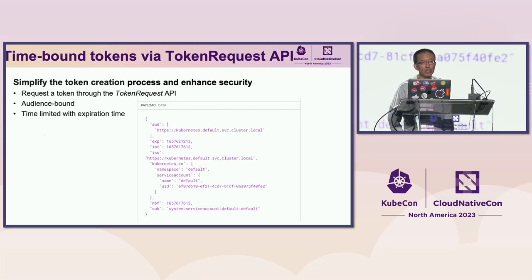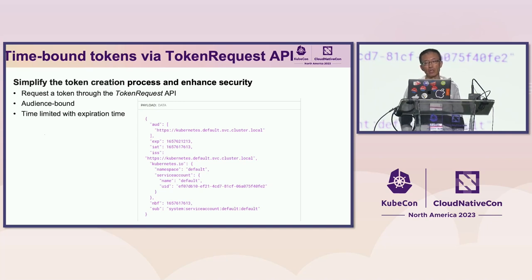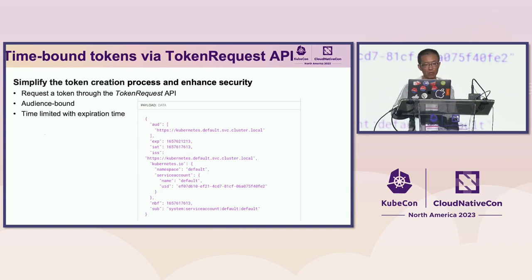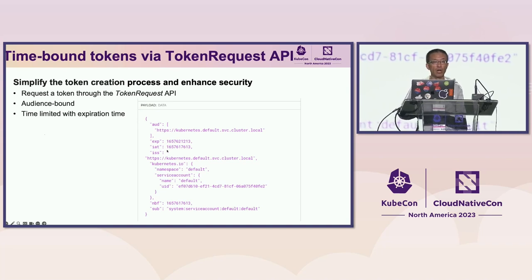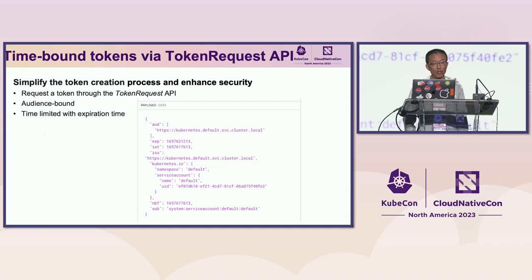Now we are moving to time-bound tokens using the token request API. You request time-limited tokens from the token request API. As shown in the example, you get a token for the service account along with an expiration time and timestamp. Importantly, the token is also audience-bound, which means it's associated with a particular pod, and it does have an expiration time.